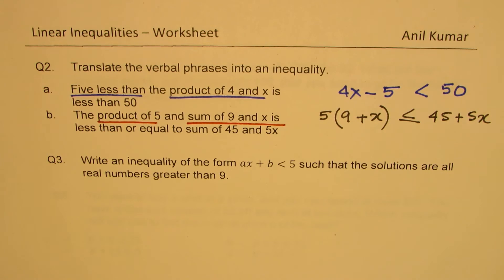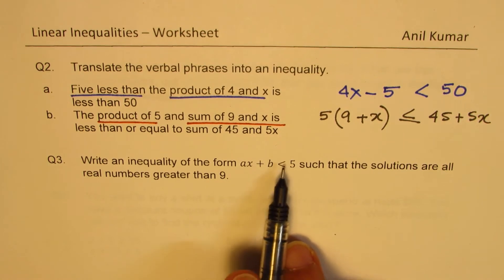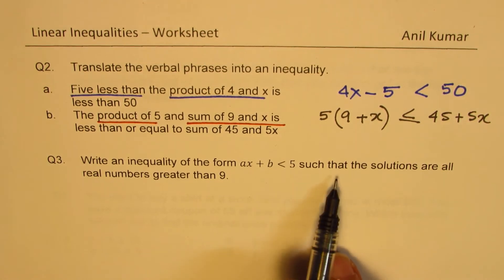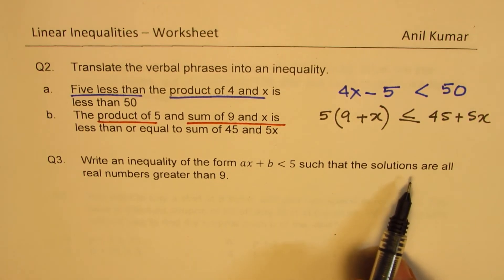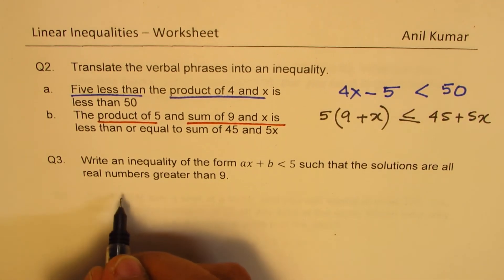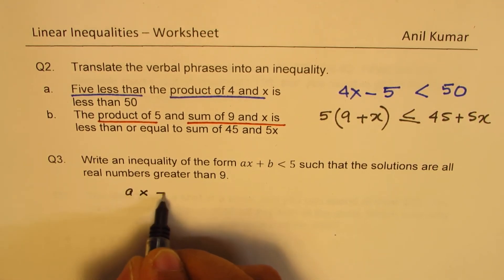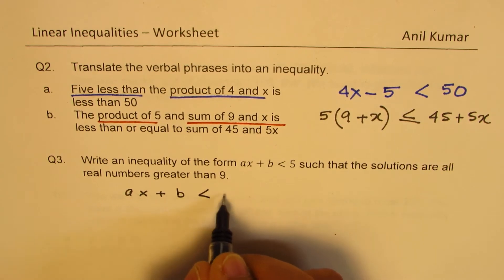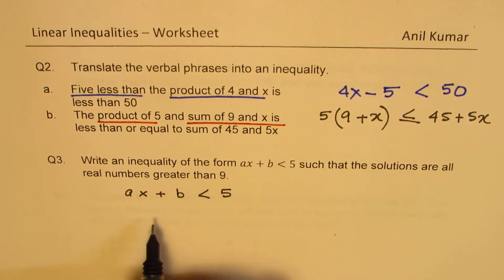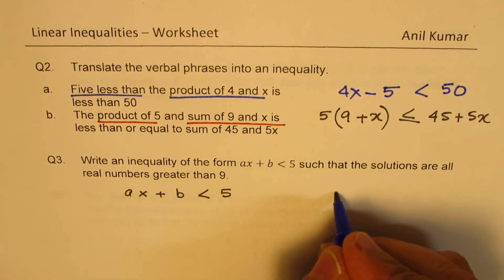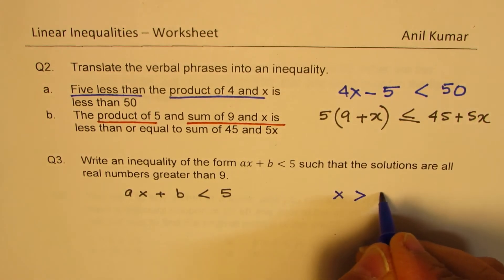I'd like you to closely look at this and understand how we have written the solution. Moving on to question number 3: write an inequality of the form ax plus b less than 5 such that the solutions are all real numbers greater than 9. We want x greater than 9.